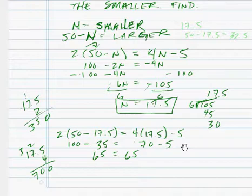So our smaller number n is 17.5, and 50 minus n, or 50 minus 17.5, gives us 32.5.